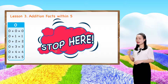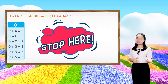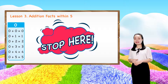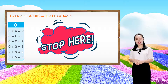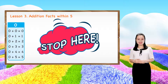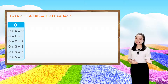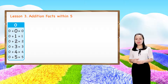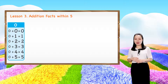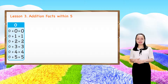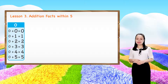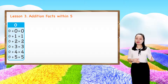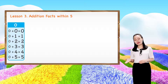We'll stop here for now because we're just learning addition facts within 5. You can see 0 plus a number equals the number itself, because 0 means nothing. So, nothing plus a number should equal the number itself.